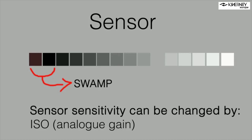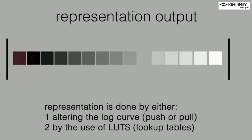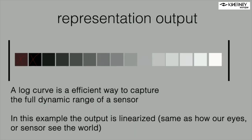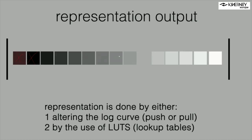The sensor sensitivity can only be changed by ISO — that's the only thing you can do at the sensor itself. After capturing, you can represent the image differently: you can push it digitally, alter the log curve, or use lookup tables to display it brighter than it was captured. This allows you to anticipate exposure — if the represented image looks too bright, you reduce the light hitting the sensor. That's what we'll later call shifting the midtone over the dynamic range. Now it's time to show some examples.